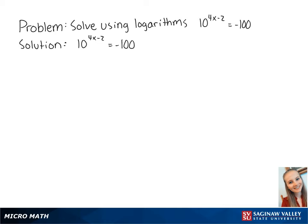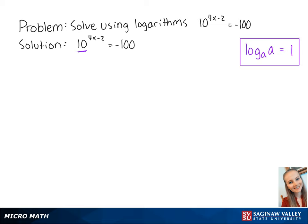For this problem, we want to solve for x using logarithms in the equation 10 to the 4x minus 2 equals negative 100. Using the following property, we're going to want to take the log of base 10. So this becomes the log of 10 to the 4x minus 2 equals the log of negative 100.